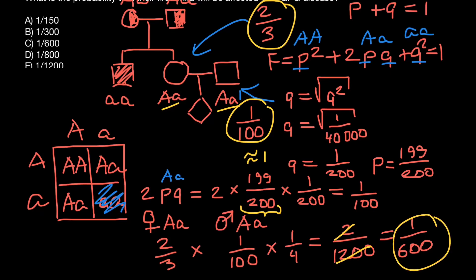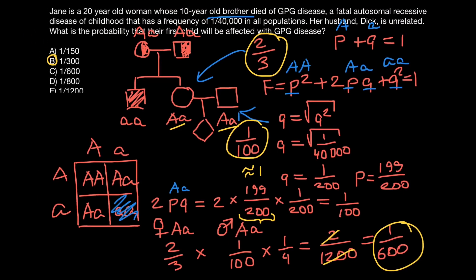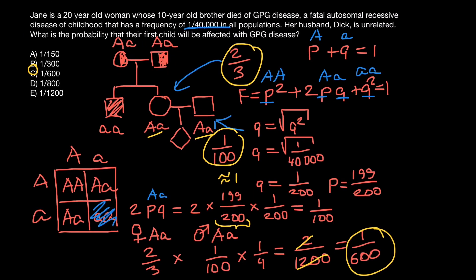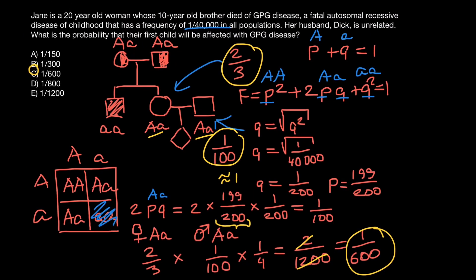And this is our answer: 1 over 600, which is answer C. This is all for today. Thank you for your attention. Please subscribe for my new videos that I post almost every day. See you in the next video. Goodbye.